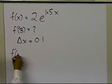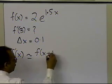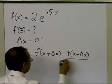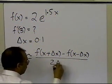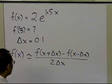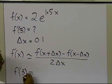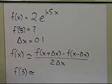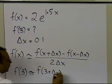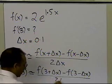Using the formula, the central divided difference scheme gives us f'(x) = [f(x + Δx) − f(x − Δx)] / (2Δx). So the approximate value of f'(3) will be f(3 + Δx) minus f(3 − Δx), divided by 2 times Δx.